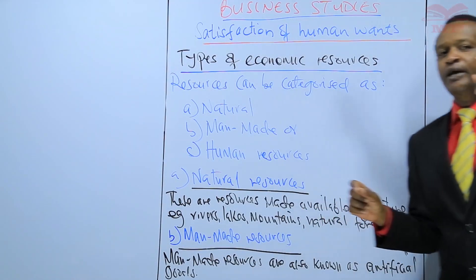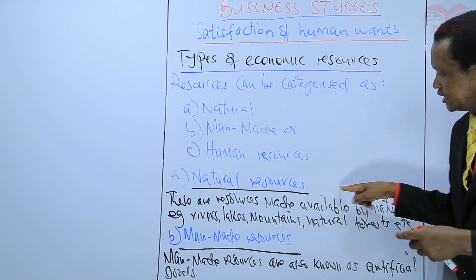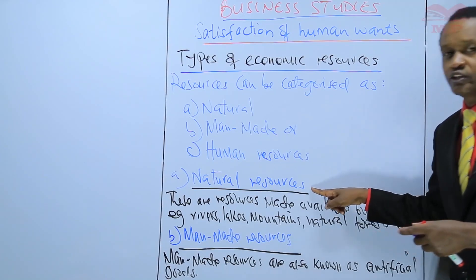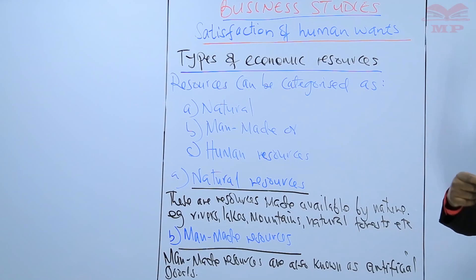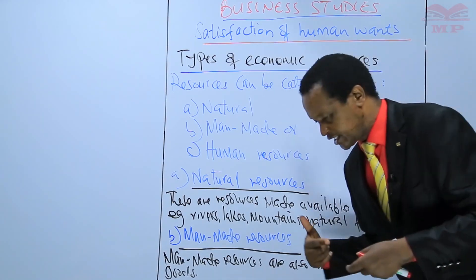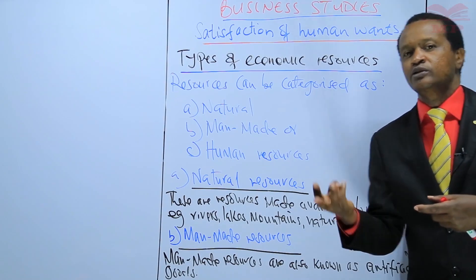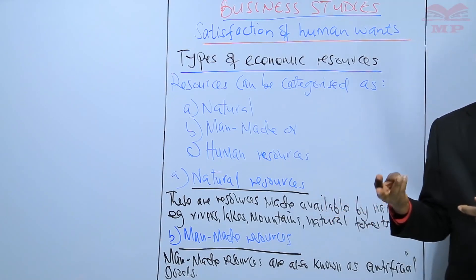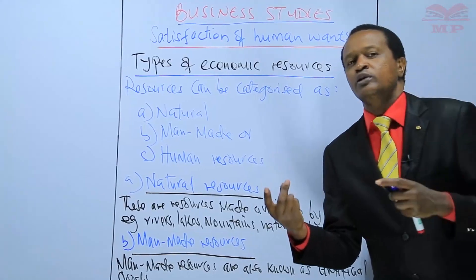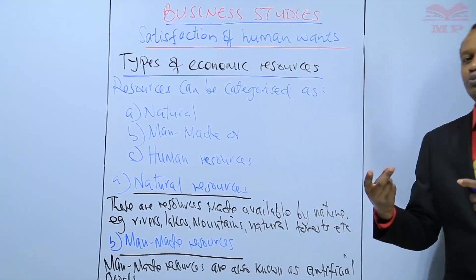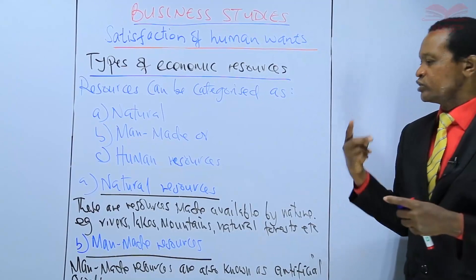Human beings make use of natural resources to produce goods that are either consumed directly, like food, like clothes and so on, or used to produce other goods and services.